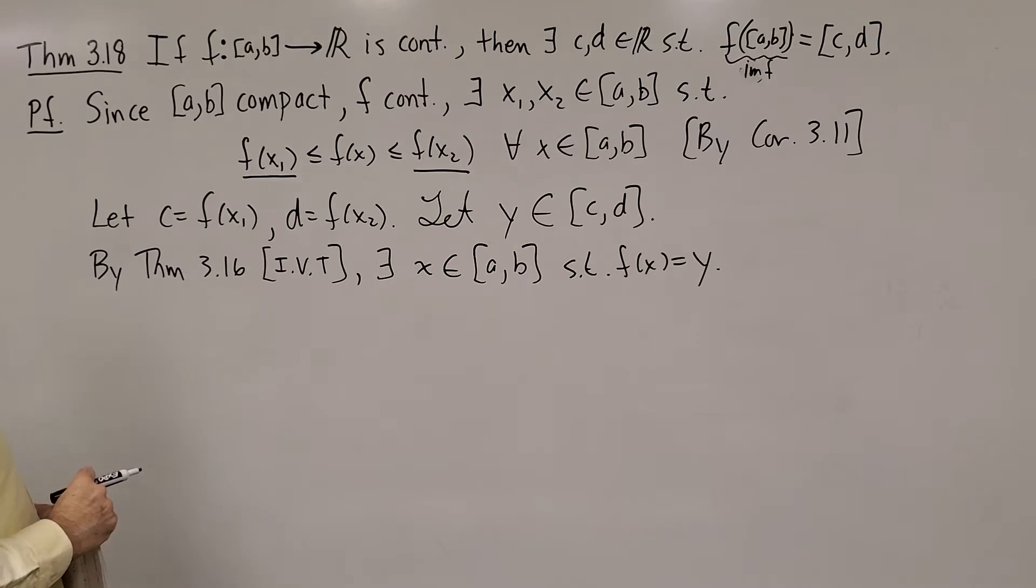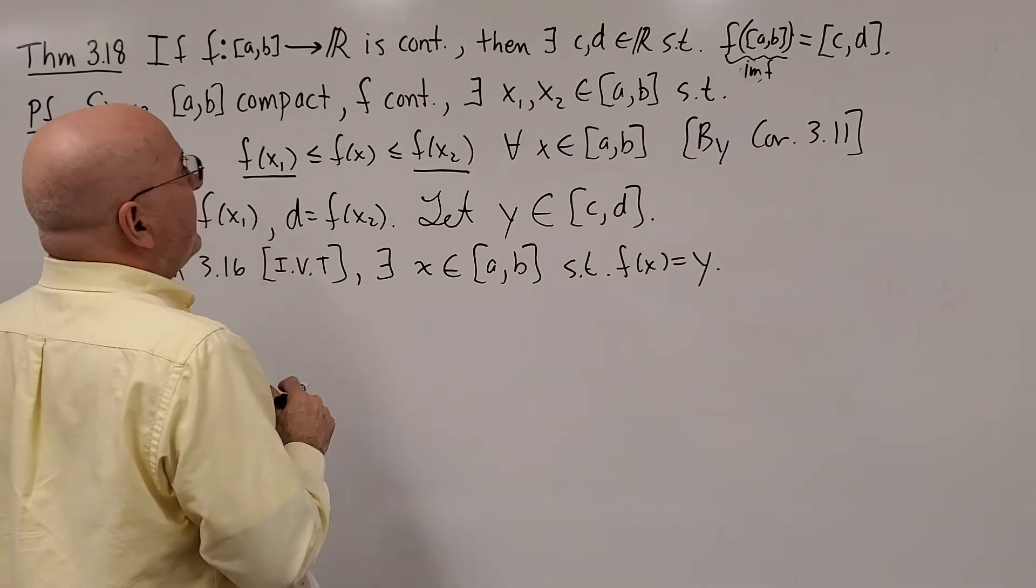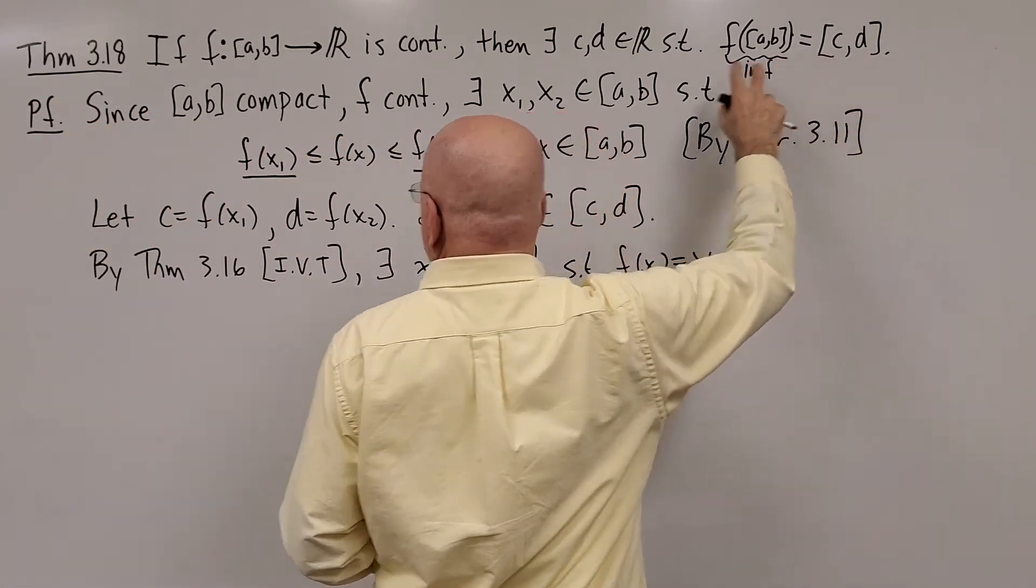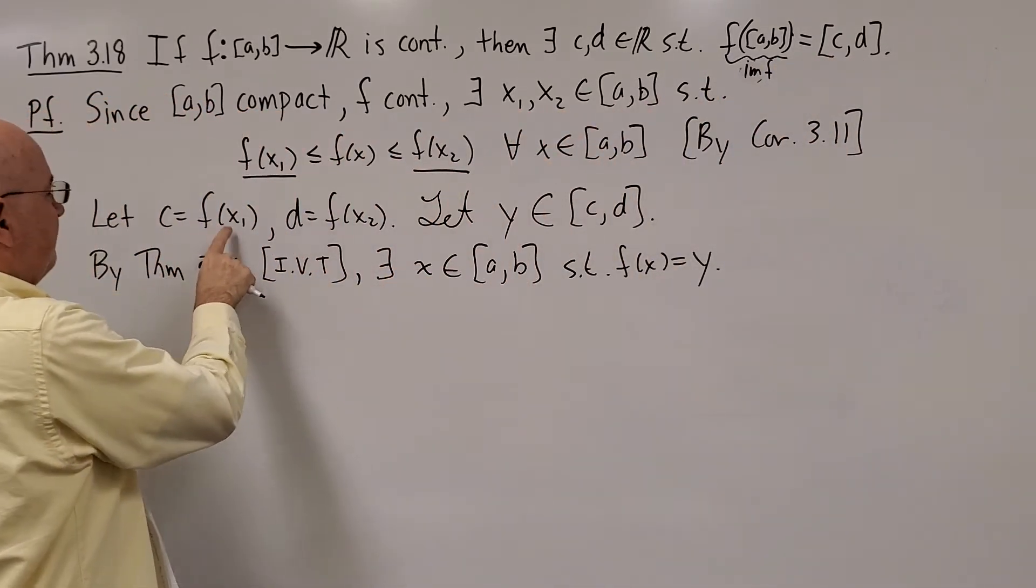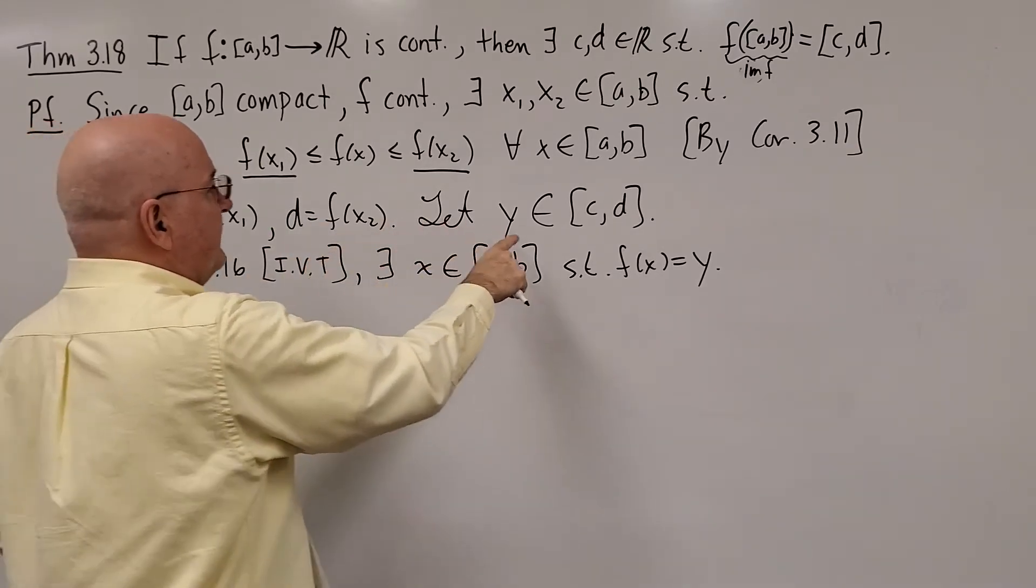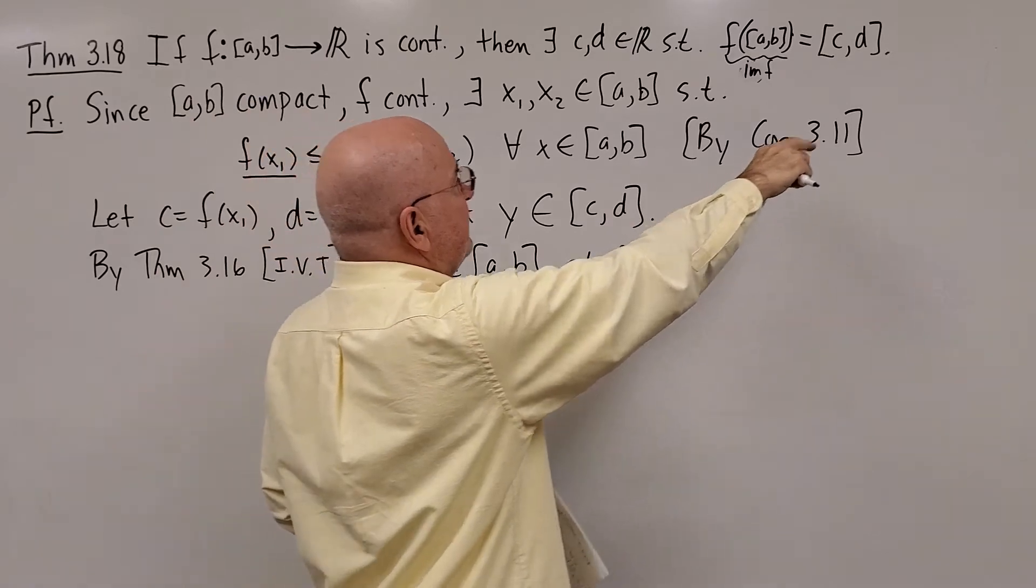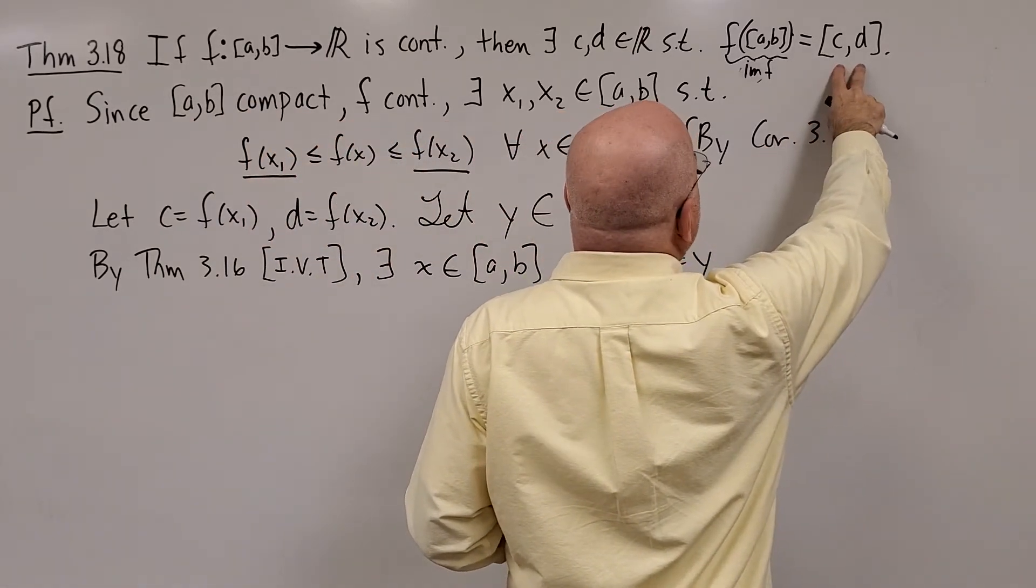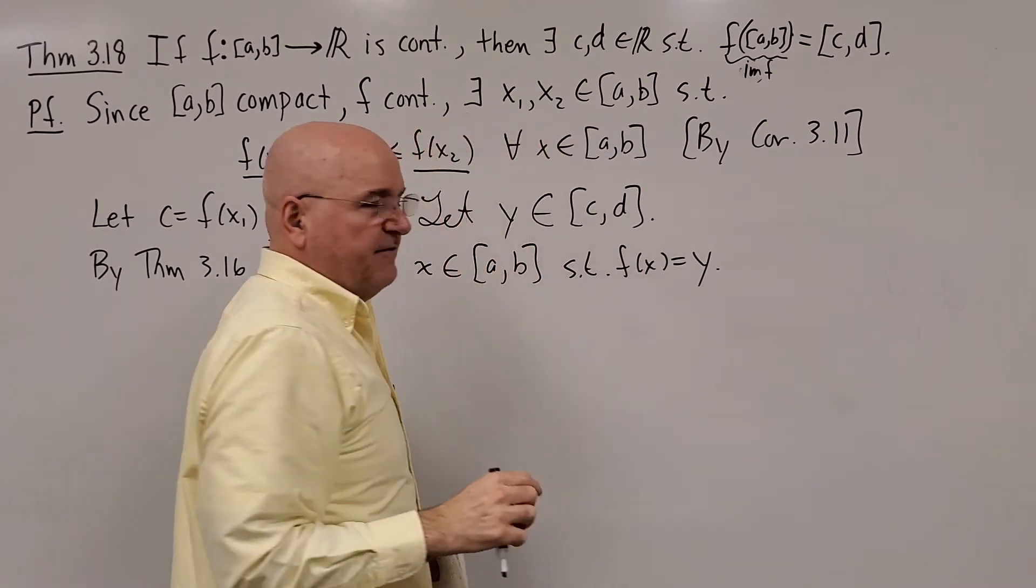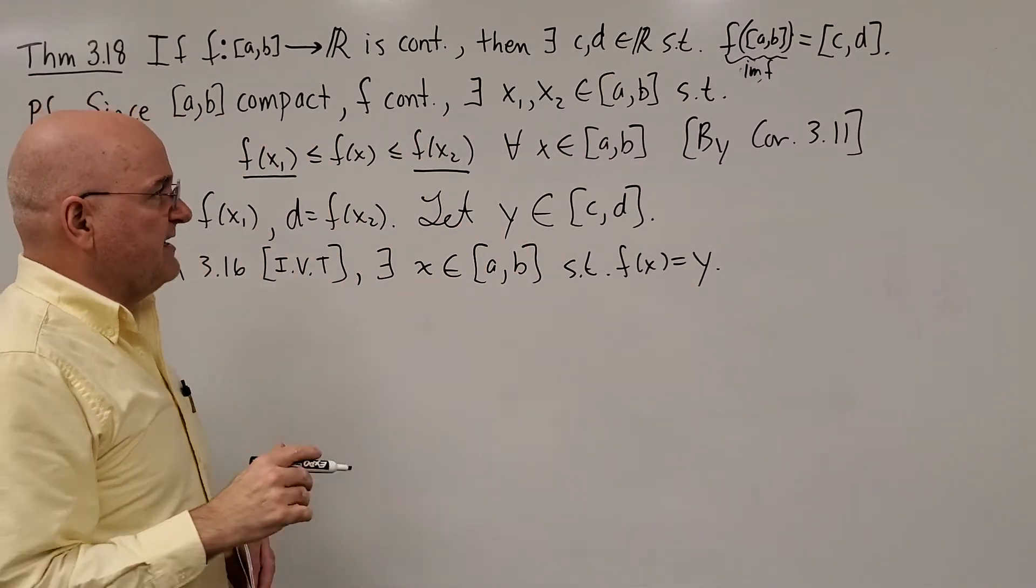That's essentially the end of the proof. We arbitrarily chose a number between C and D. C and D are already covered: F of x1 is C, F of x2 is D. If Y is any number in between, well we found an X such that F of X is equal to that height Y.